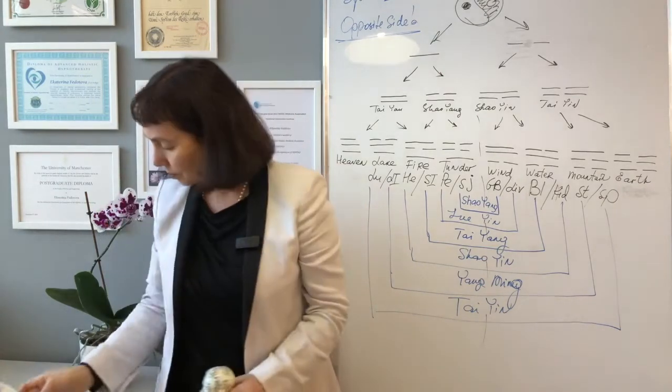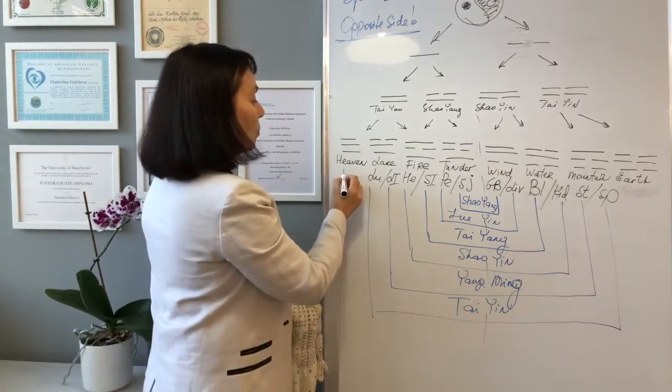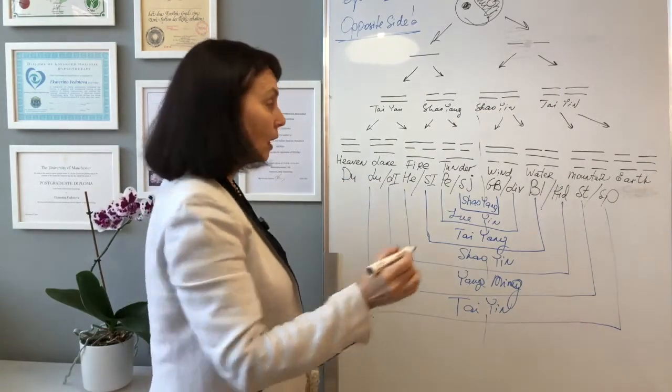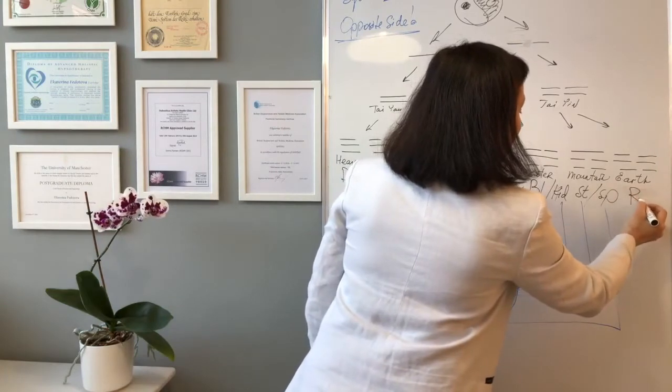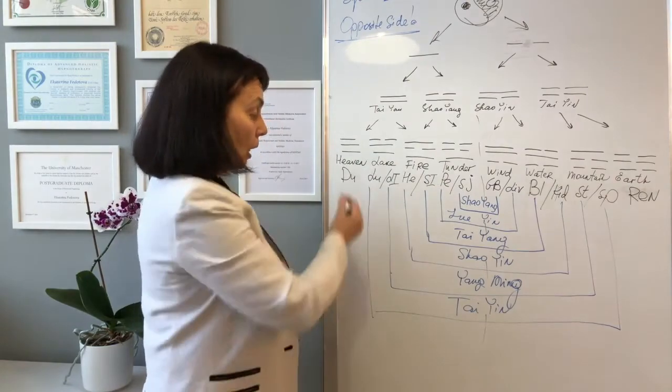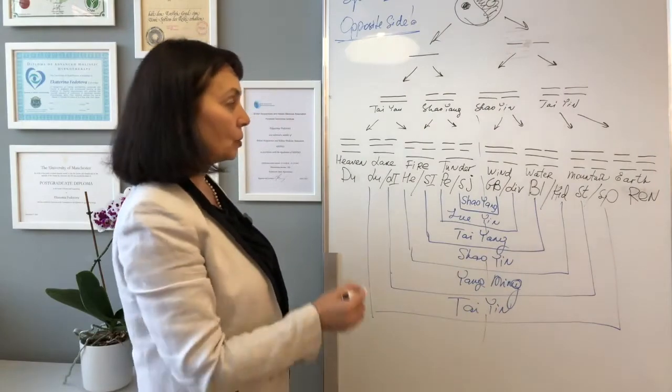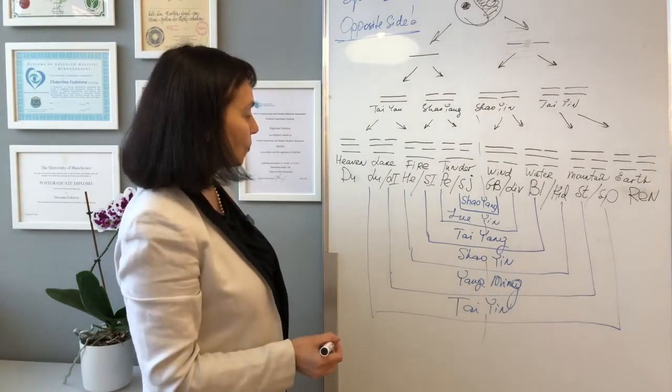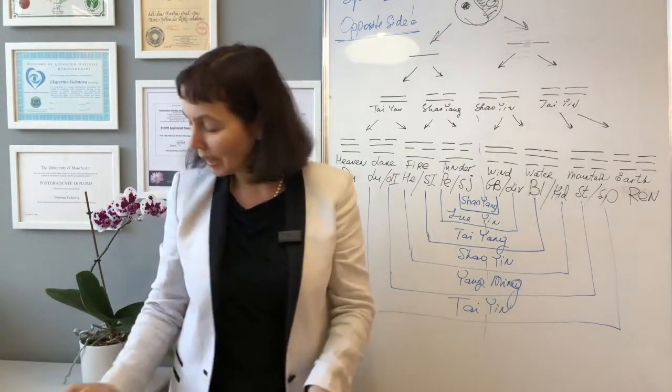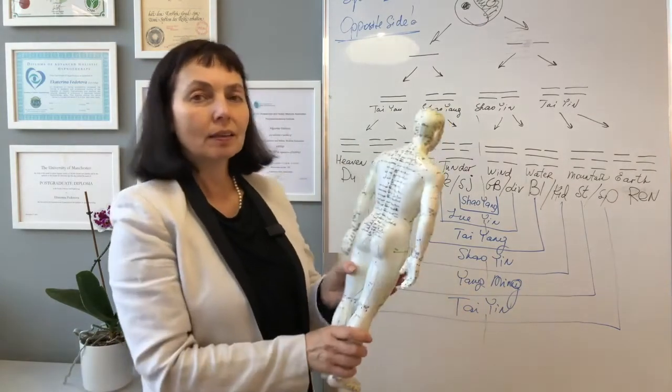And the earth is represented by du. Everyone agrees? And the earth is represented by ren meridian. We don't know the connection and we don't know how to call this connection. But how can we apply it in acupuncture? Easily. The trick.